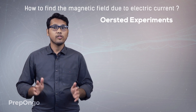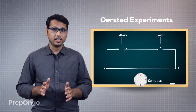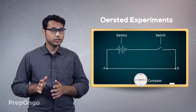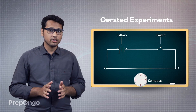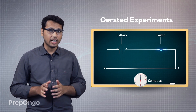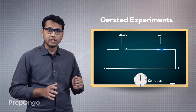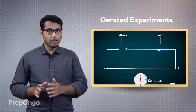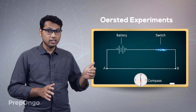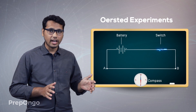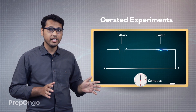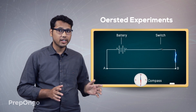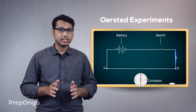Let us first learn what experiments he did. He took an electric wire, connected it to a battery through a switch, and also placed a magnetic needle nearby to show the deflection. When he switched on the battery, current started flowing from A to B, since current always flows from positive to negative. The moment he switched on, the magnetic needle deflected in the downward direction. By this observation, it is proven that the electric current was producing some magnetic field that was deflecting the needle.